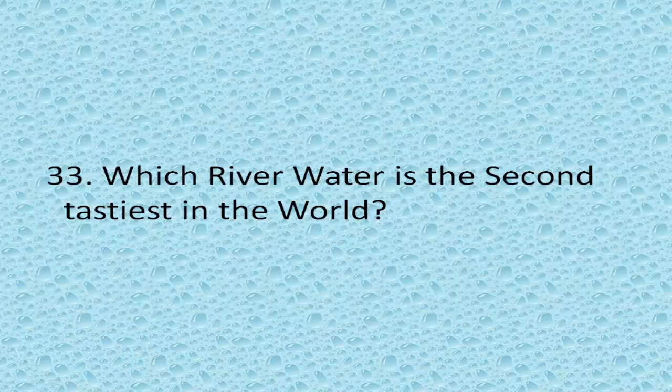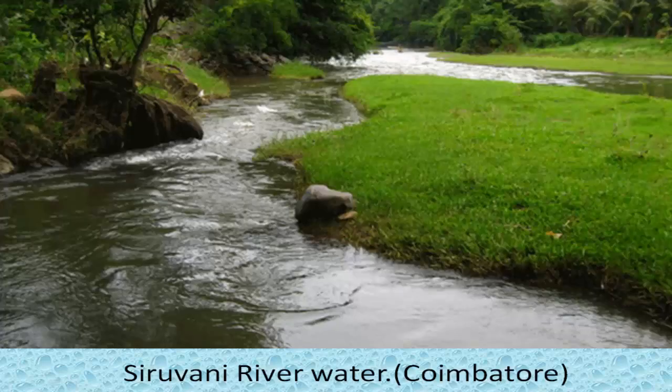Which river water is the second tastiest in the world? Siruvani River Water, Coimbatore. Siruvani River is a tributary of Bhavani River, which in turn is a tributary of River Kaveri.